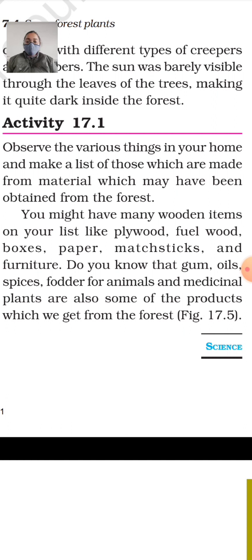You might have many wooden items on your list like plywood, fuel wood, boxes, papers, mats, sticks, and furniture. There will be many different things like wooden floors and ceilings. The raw material for all these is wood.